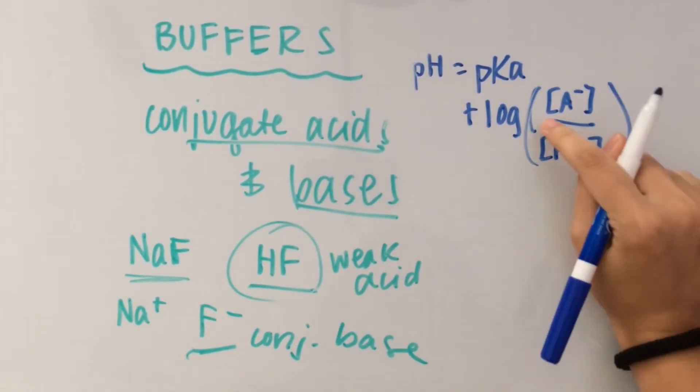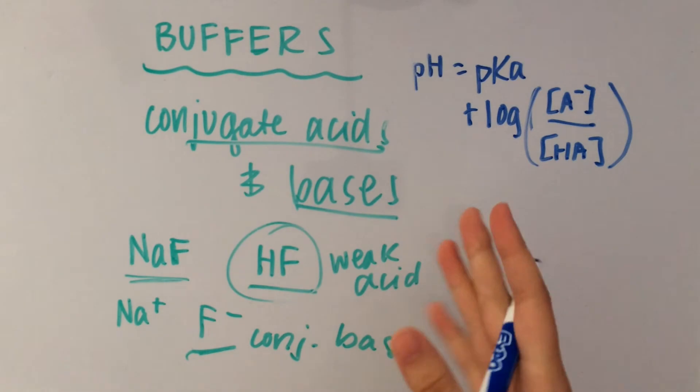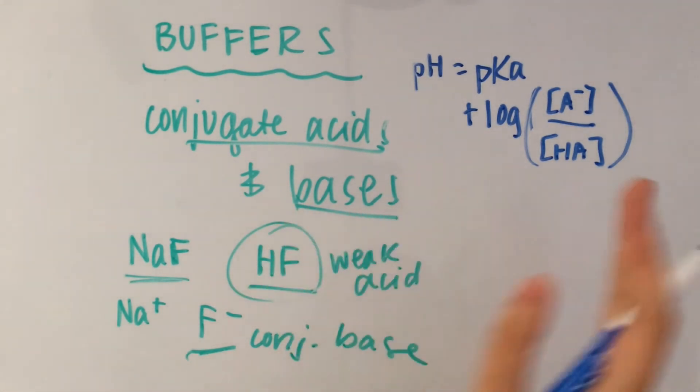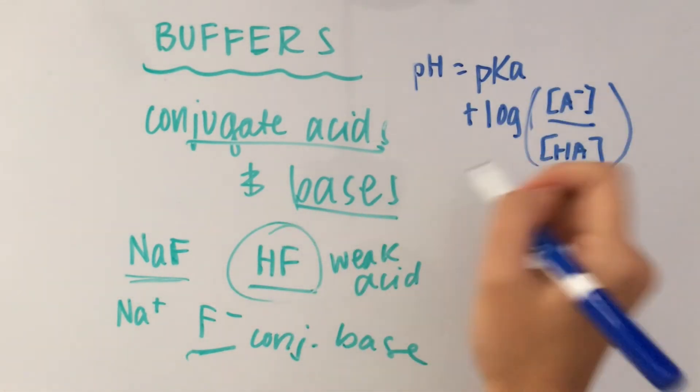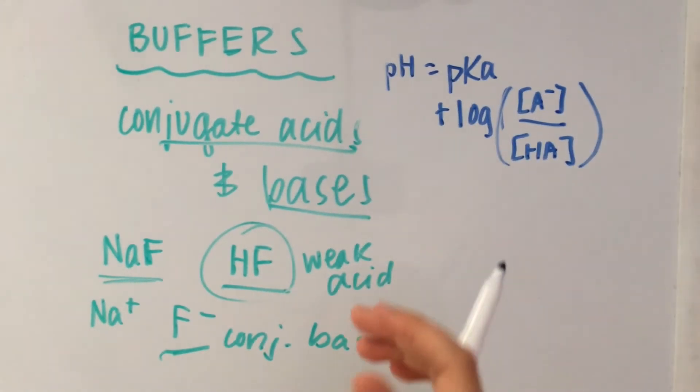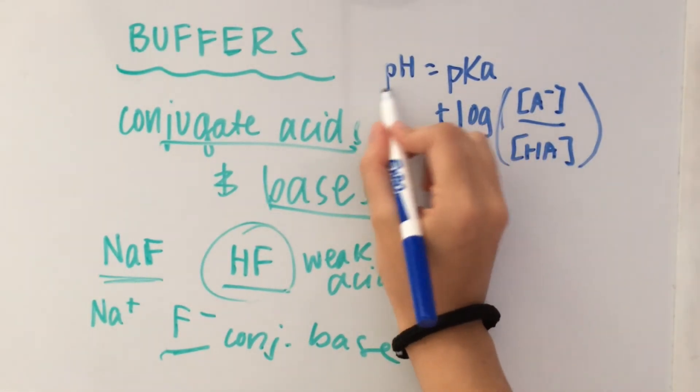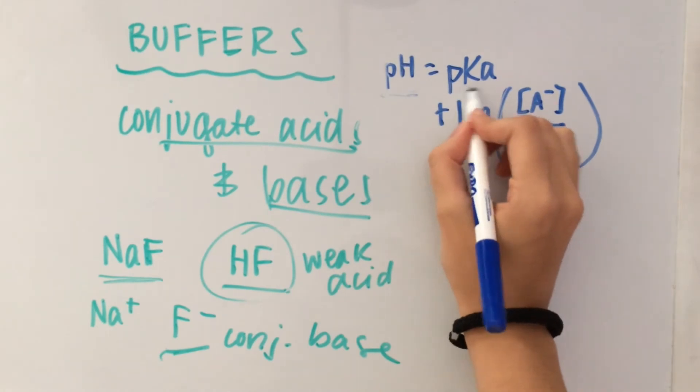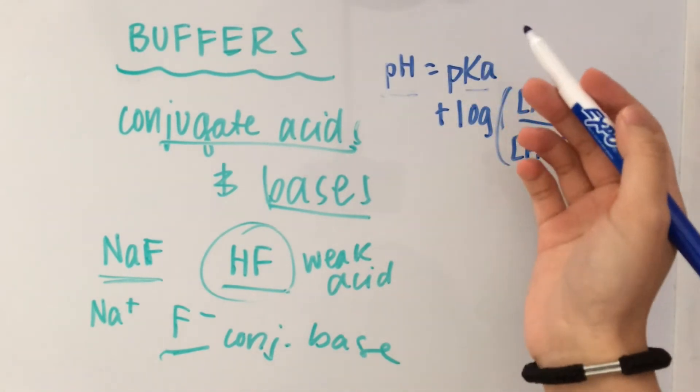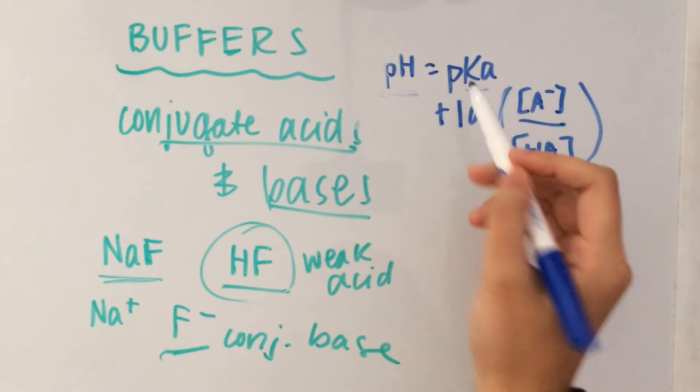So if a question ever asks you about the ratio of the base to the acid, you can use the Henderson-Hasselbalch equation for that. So they would usually give you the pH and the Ka, and then you would just take the negative log of the Ka to give you pKa.